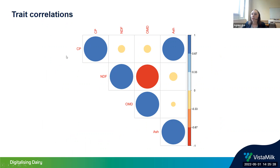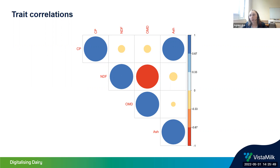Looking at overall trait correlations: we found a positive correlation between crude protein and ash. We also found a very strong negative correlation between NDF and OMD, which is expected — NDF gives information on the undigestible part of the feed while OMD gives information on the digestible part, so a negative correlation is to be expected.